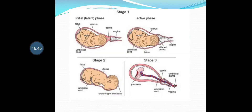You can go through the picture showing stage 1, which has two phases: the initial or latent phase and the active phase. Contraction of cervical muscles takes place in the initial phase, followed by the active phase.